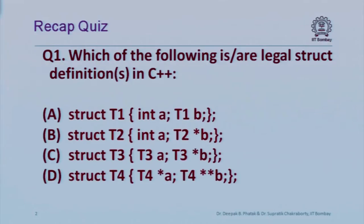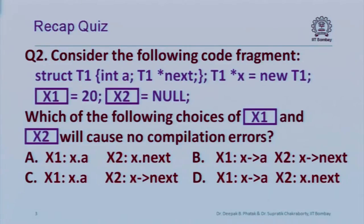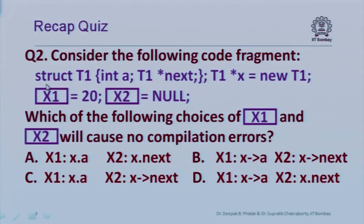Now the quiz. First question: which of the following are legal struct definitions in C++? Then: here is a struct defined with two members, and an object is dynamically allocated with 'new', storing the pointer in X. Assuming allocation succeeds, we want to initialize the two members — integer A to 20 and pointer member 'next' to null. What should X1 and X2 be?